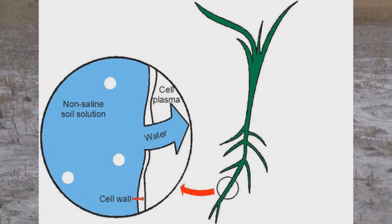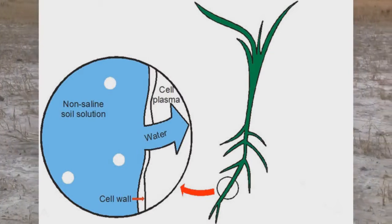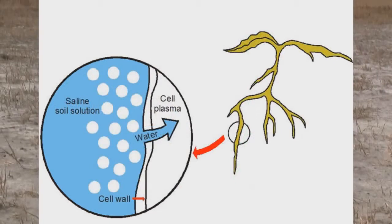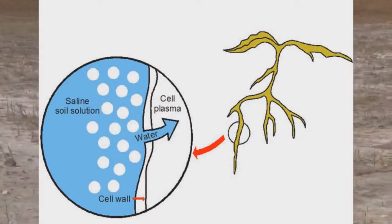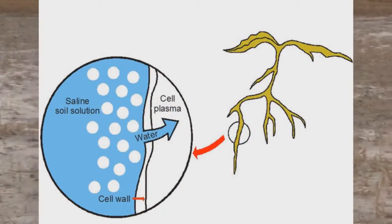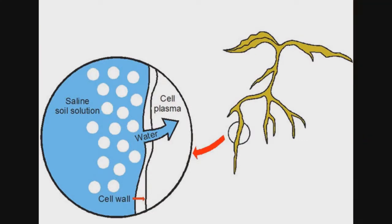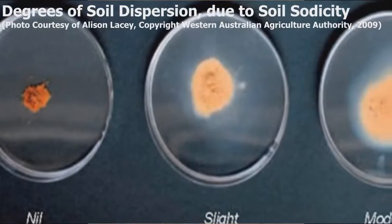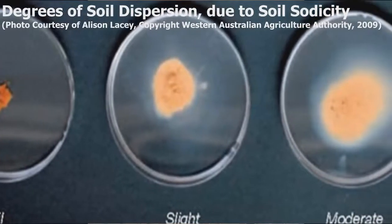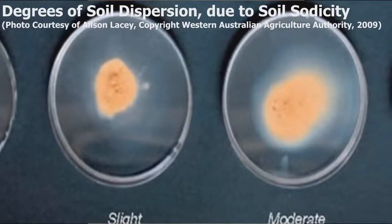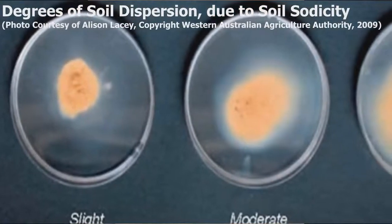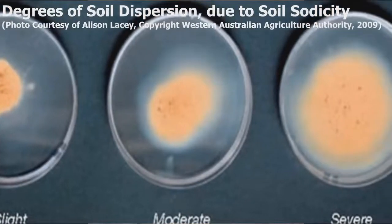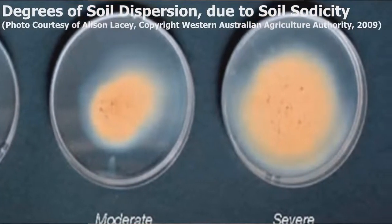How do these problems affect crops? Excessive soluble salts deprive the plant roots from uptaking soil water, even under wet conditions, causing drought-like symptoms — that is called the osmotic effect. Excessive sodium, on the other hand, causes disintegration of soil particles and damage to the soil structure, called dispersion. That leads to difficulty in tillage, poor seed germination, poor soil drainage, and restricted root growth, along with increasing the potential for wind and water erosion.